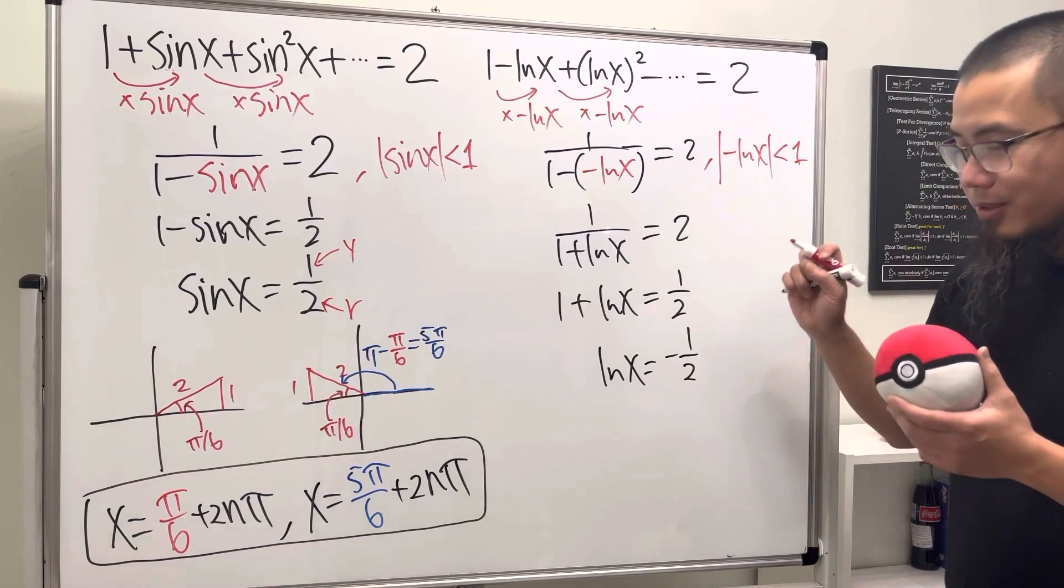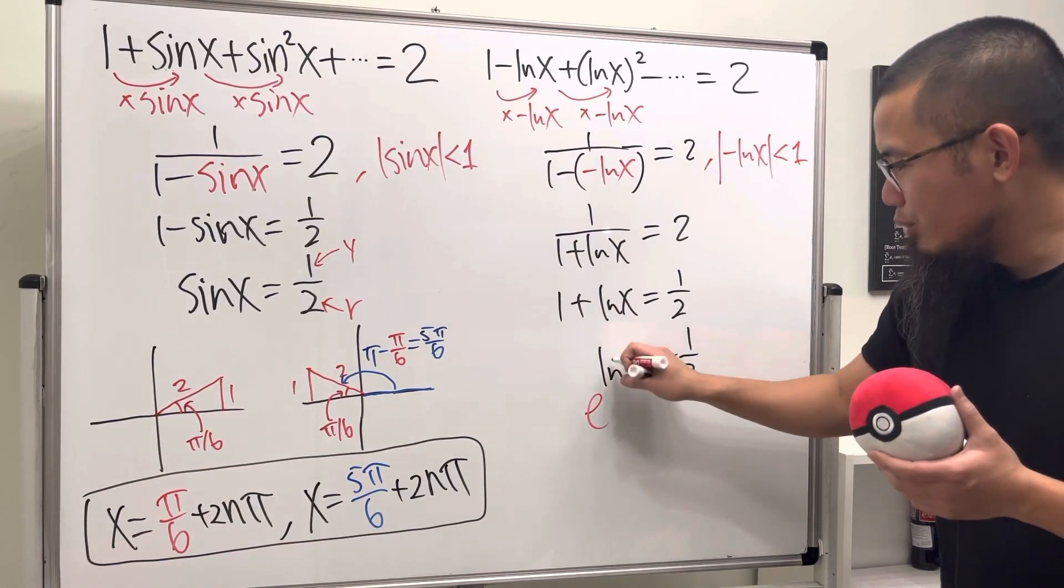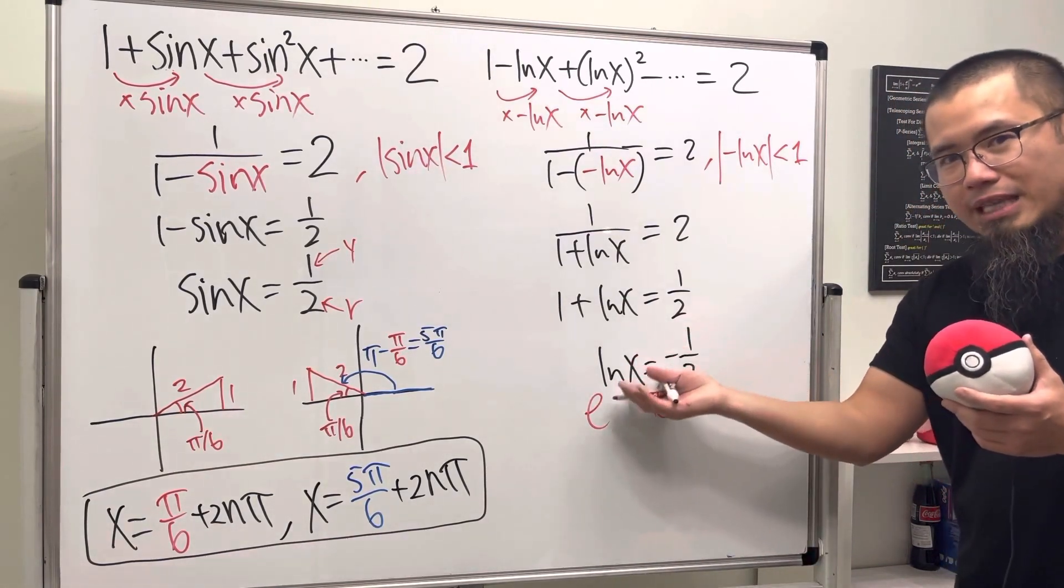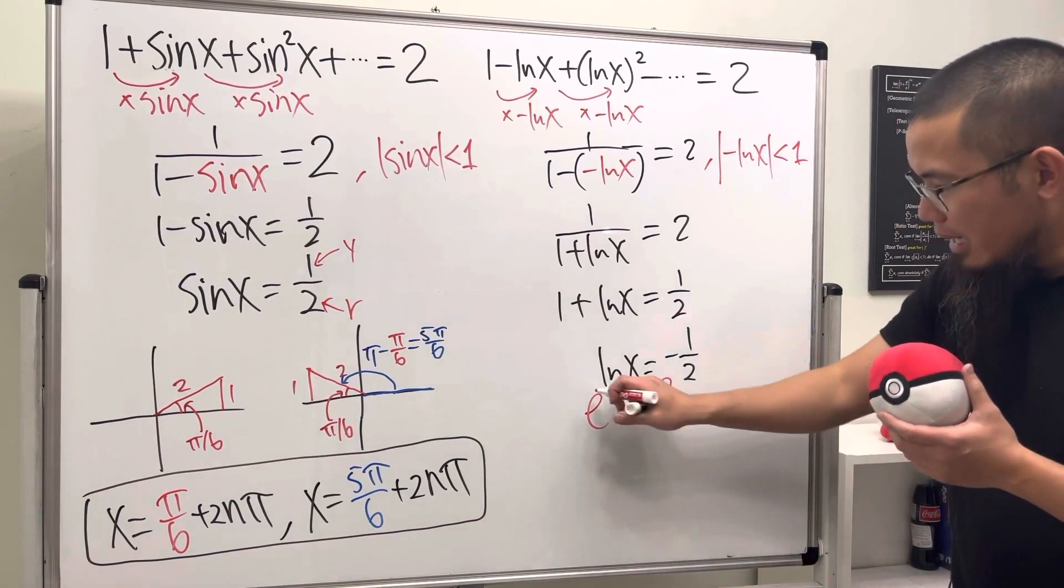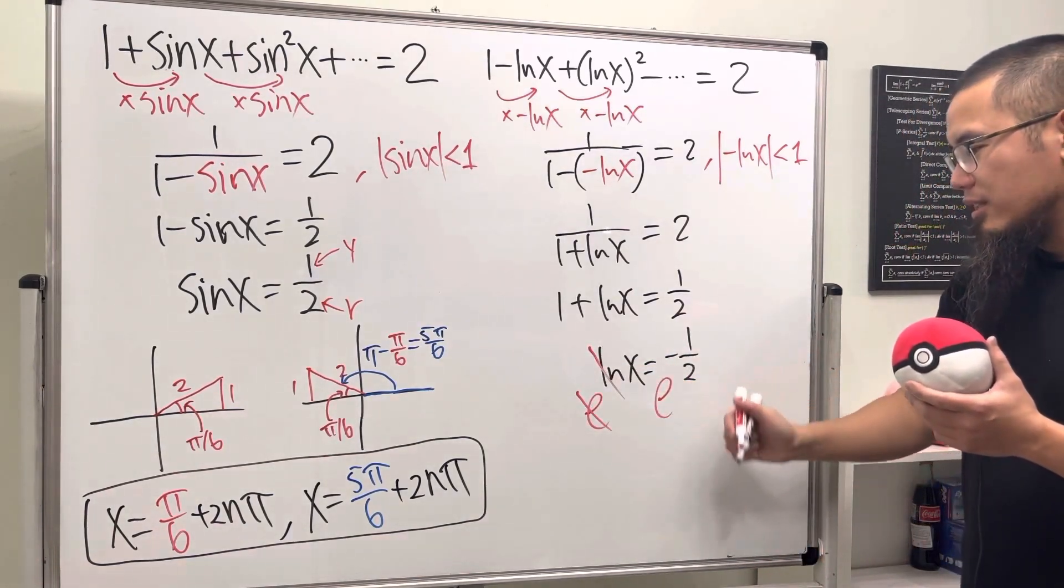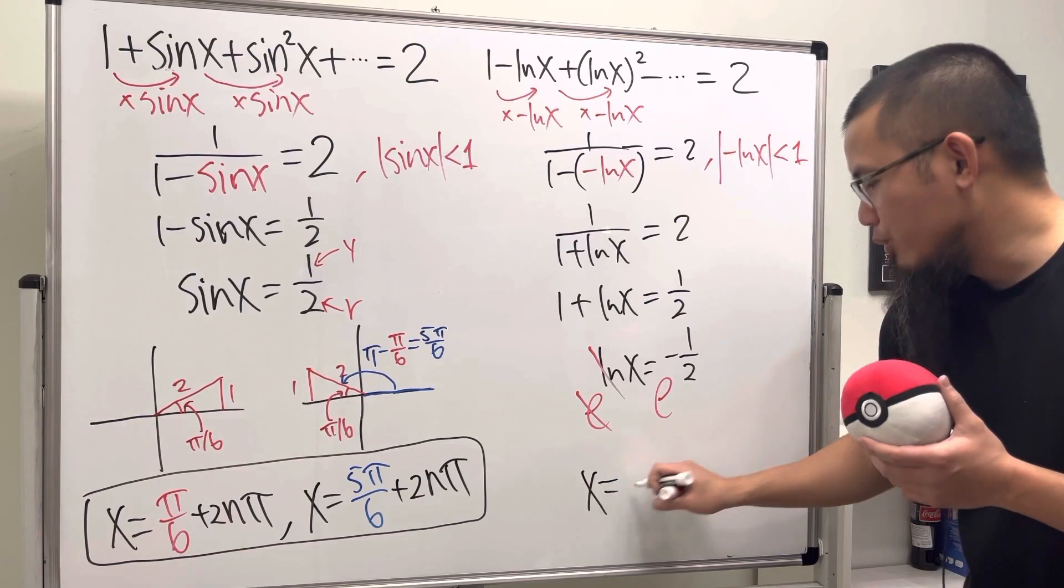Yep, and then to solve for this equation, you do e to that power, e to that power, because ln is the same as log base e and they cancel. So, ladies and gentlemen, x is just equal to—one answer here—e to the negative one half power.